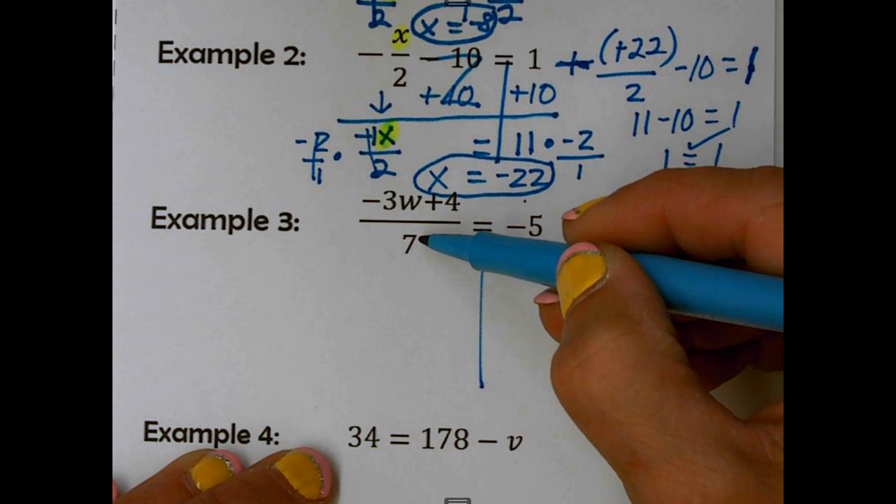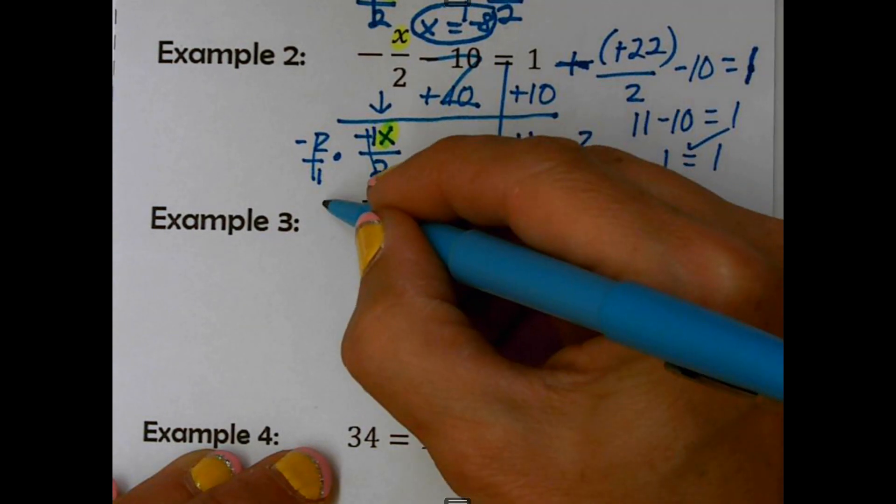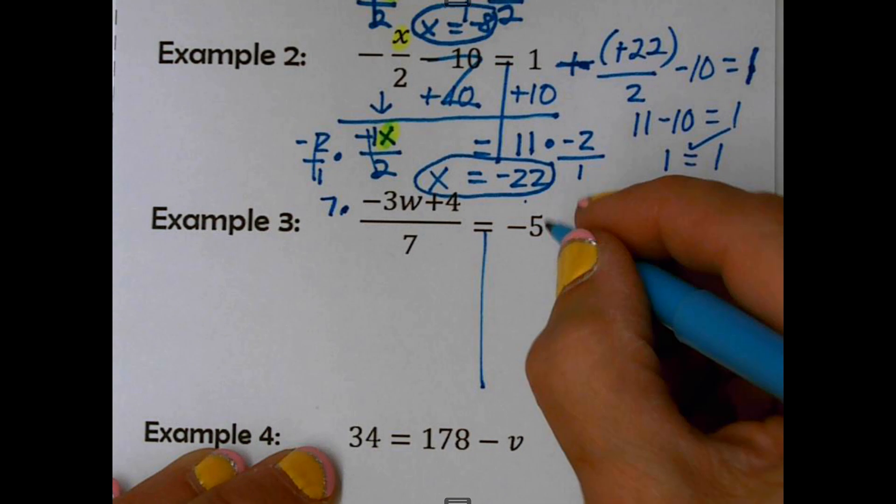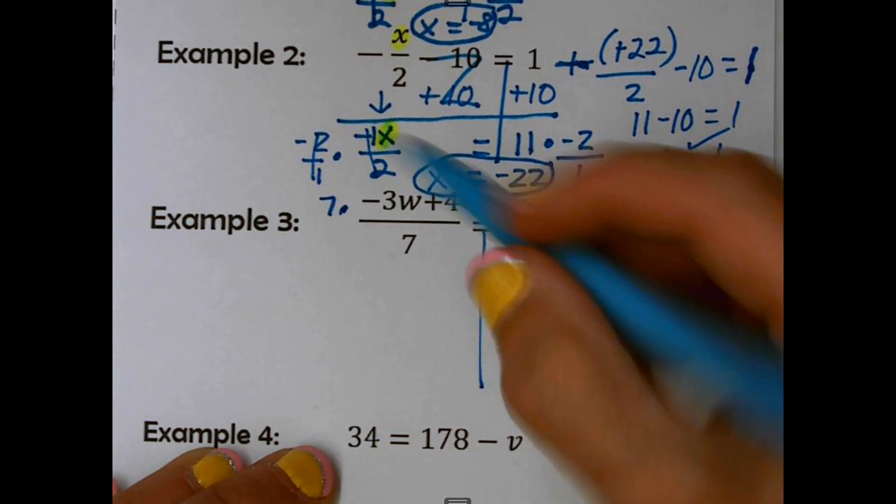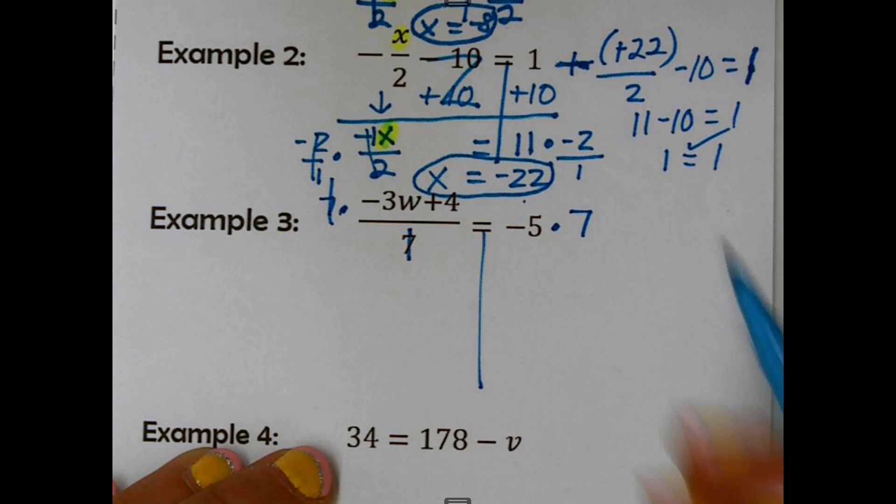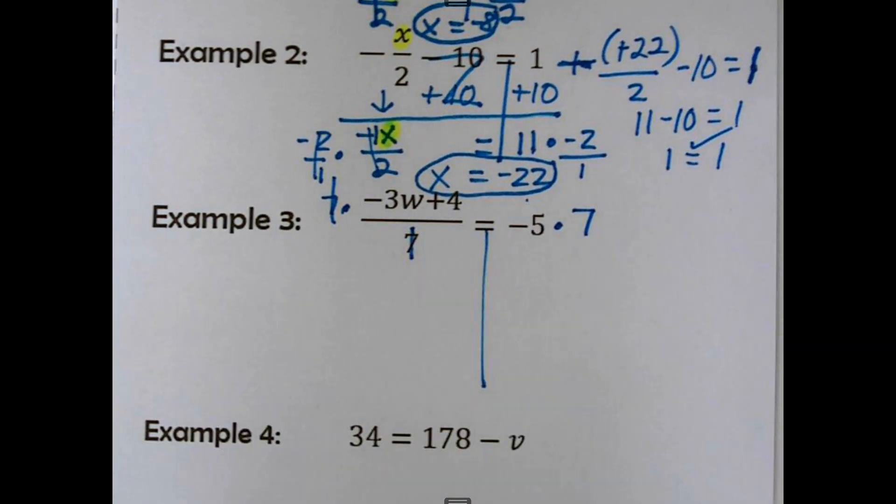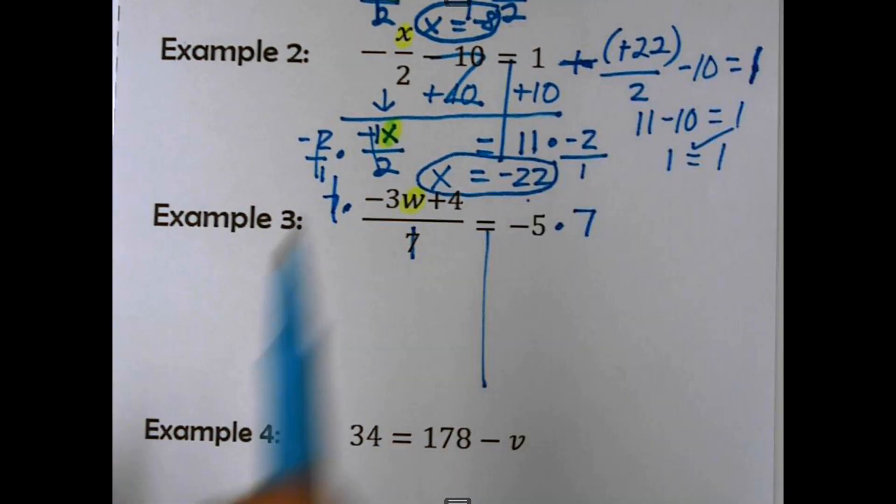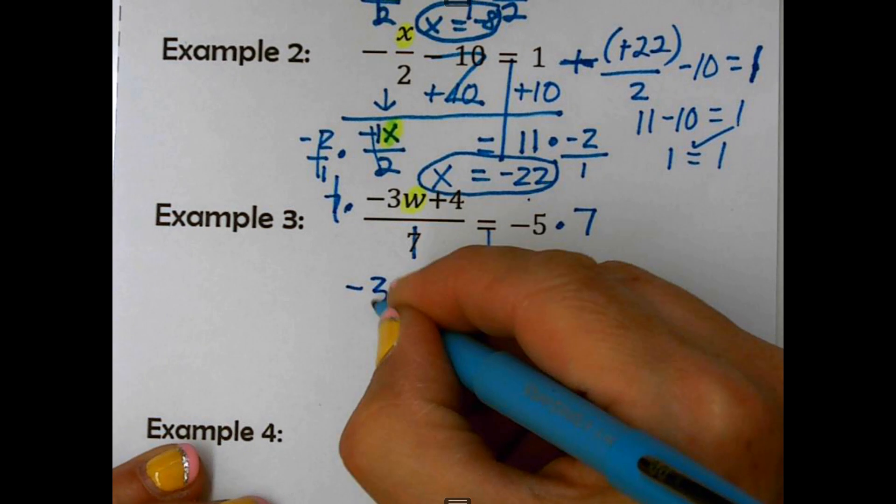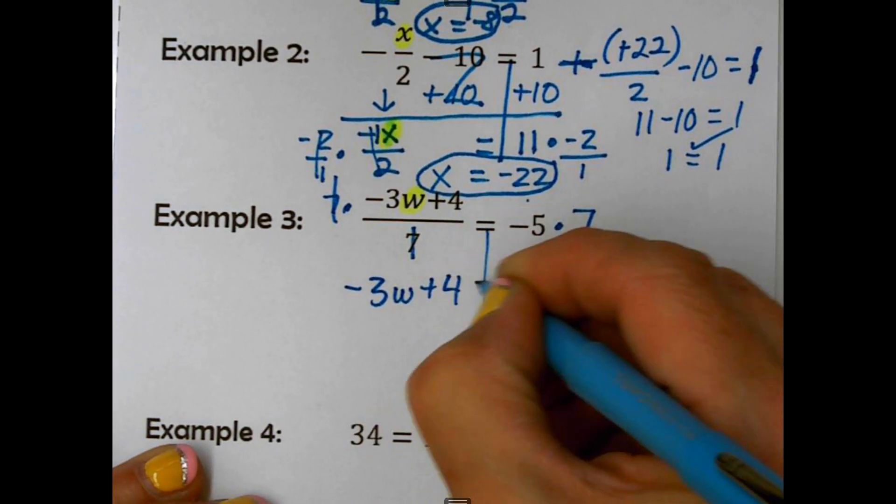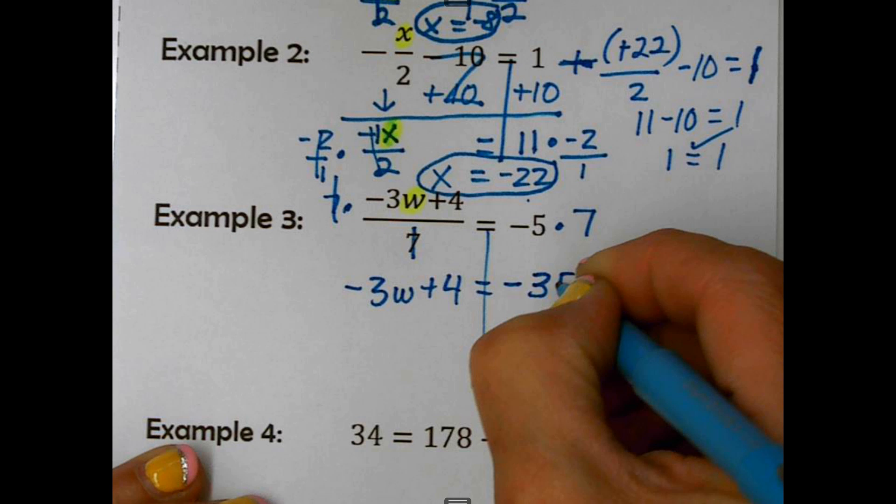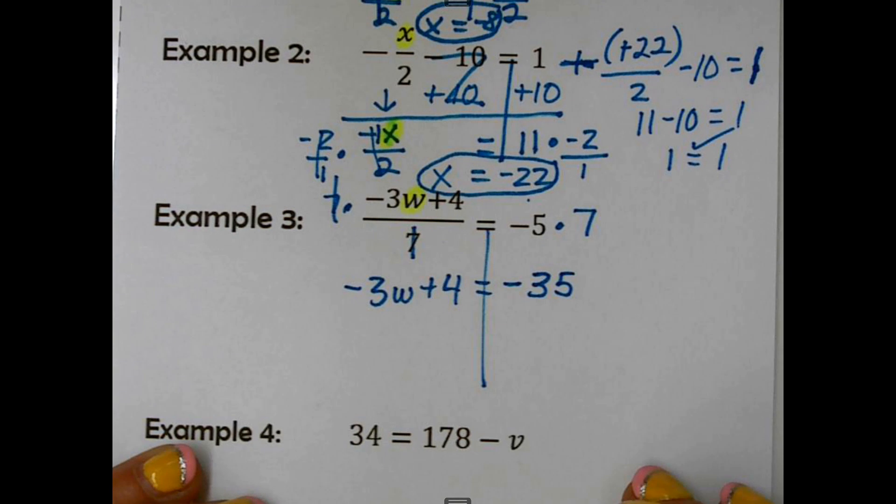Bring down... Let me highlight that there for you. Bring down negative 3w plus 4 equals negative 35. Now, I'd like you to go ahead and work it out. I'm going to work it out too, but I'm just not going to talk. You go ahead and finish it out here and see if you do the same thing I do.